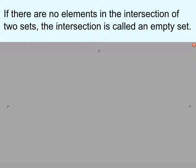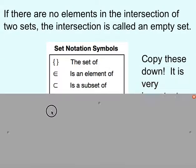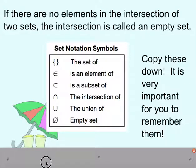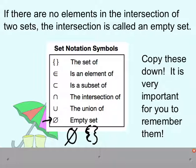If there is a possibility that we don't have any elements in the intersection — they're completely different with nothing in common — we call this an empty set. We've used many symbols so far: curly braces for sets, E for element, the C-like symbol for subset, the ∩ symbol for intersection, ∪ for union, and for empty set we can use a zero with a cross through it, or just curly braces with nothing inside. Make sure you know these symbols.